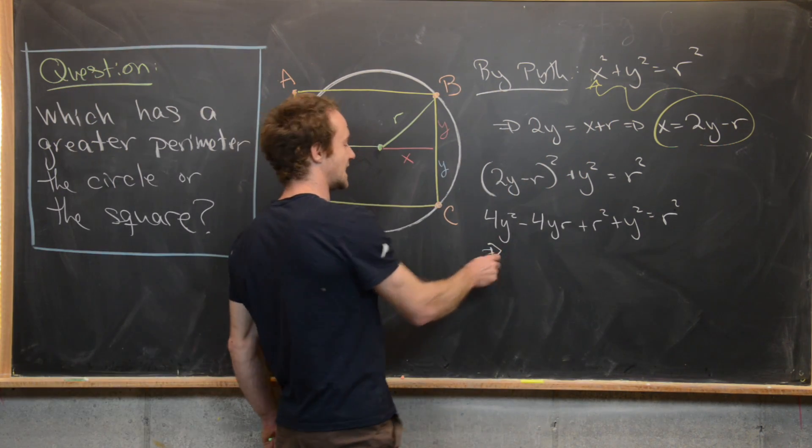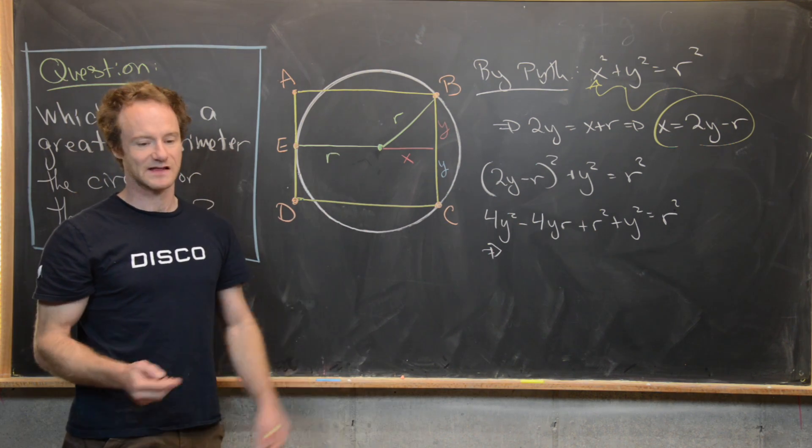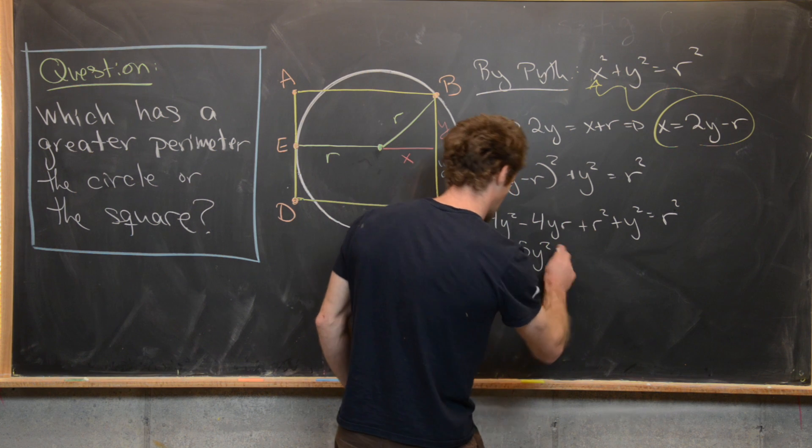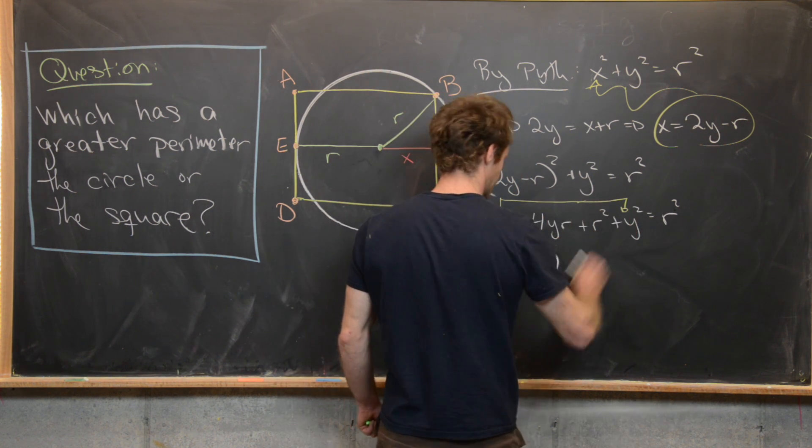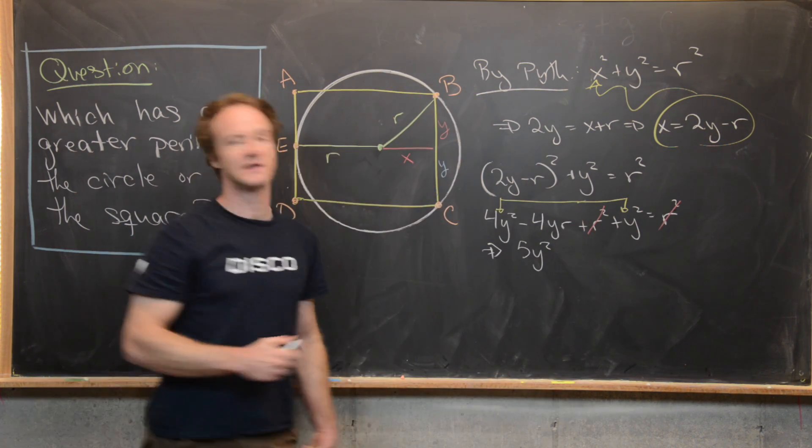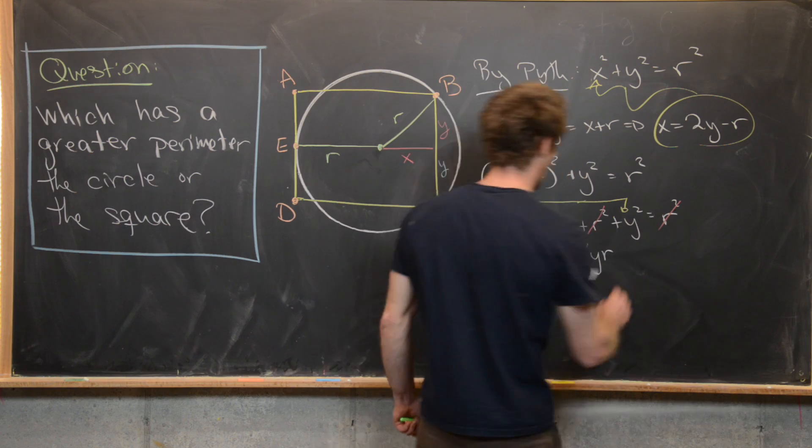But then that's going to give us a nice relationship between Y and R, which is exactly what we need. Notice that's going to give us 5Y squared. We get that from adding this 4Y squared with this Y squared. And then also notice that the R squareds cancel on both sides of the equation. And then we have this is equal to 4YR.